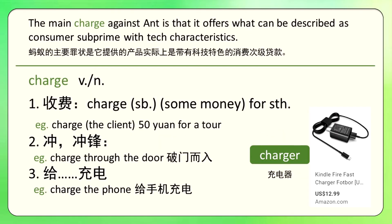首先我们来看charge这个单词，它可以做动词也可以做名词。做动词的时候可以是及物动词也可以是不及物动词，做名词的时候一般是可数名词。这个词其实很多意思我们都非常熟悉，比如第一个意思是收费，它的用法一般是charge谁多少钱for something。